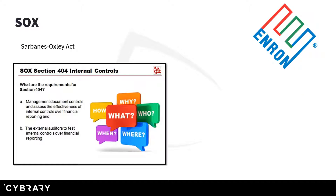SOX, or the Sarbanes-Oxley Act — if anyone remembers the Enron and WorldCom scandals from the early 2000s — this act was passed to help protect investors against fraudulent accounting practices in corporations. With those scandals, investors didn't know the companies were essentially cooking the books. So SOX was put in place to ensure certain controls. Nowadays executives have to sign off on financial reports and can be held criminally as well as civilly liable if there's an issue with those reports.